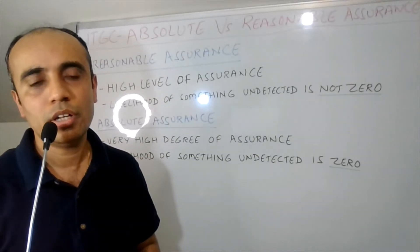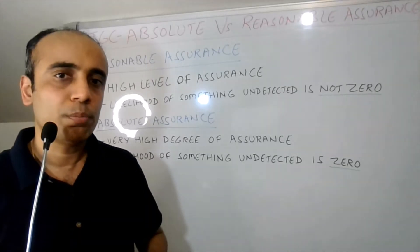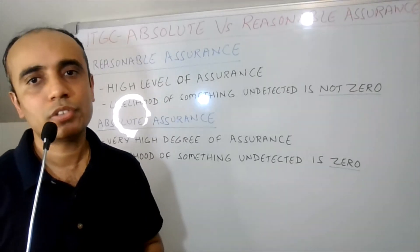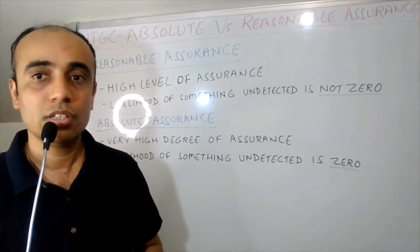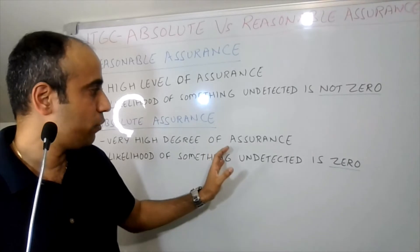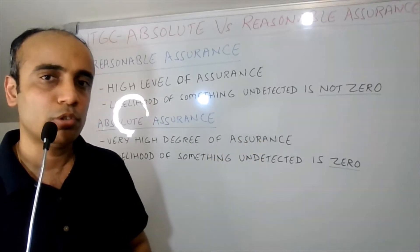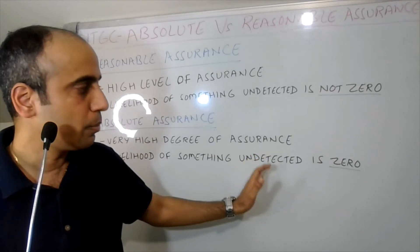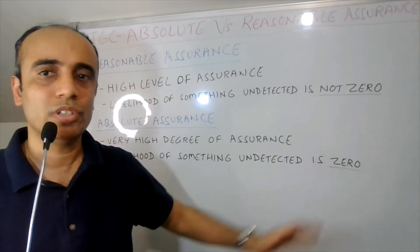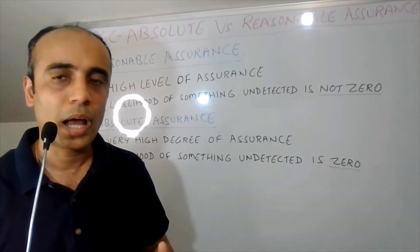When we talk about absolute assurance, as the name suggests it's complete or perfect. So the likelihood of something being incorrect and not getting detected is zero. We have a very high degree of assurance in absolute assurance, and the likelihood of something remaining undetected is zero. That's the reason the word absolute is used.